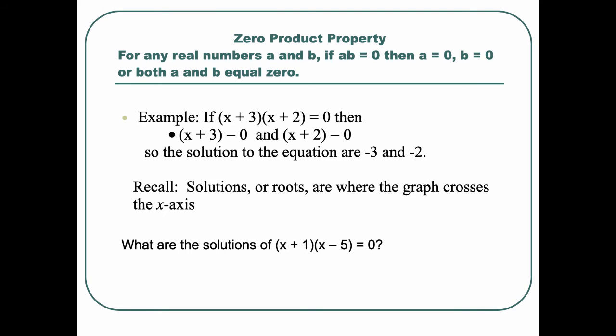Here is what's new today: the zero product property. For any real numbers A and B, if A times B equals zero, then A has to be zero, B has to be zero, or both can be zero. If you set something equal to zero, the first factor or the second factor would be zero, or they both have to be. So we can set either factor or both factors equal to zero and solve.